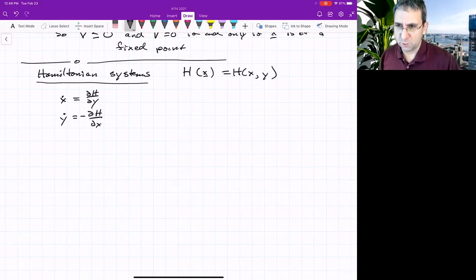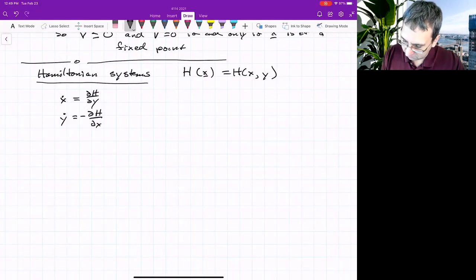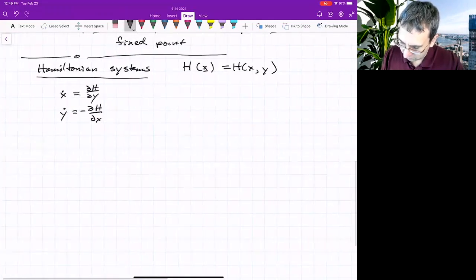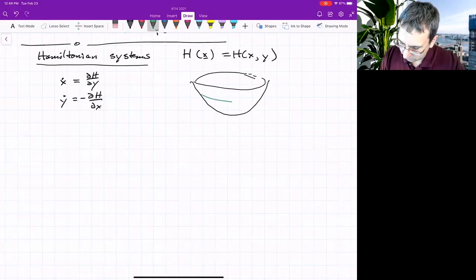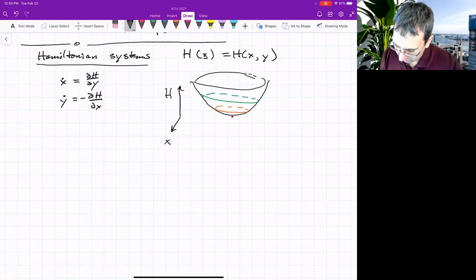There is a relationship with the gradient here. So suppose I have some, I'll make a bowl-shaped function over here. Got some contours, got a minimum point. This is h, and then we've got x and y. If we were to plot what the contours look like, got contours of this.